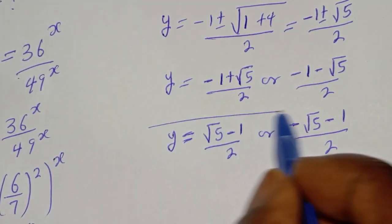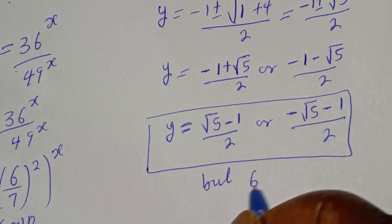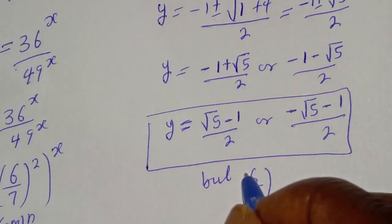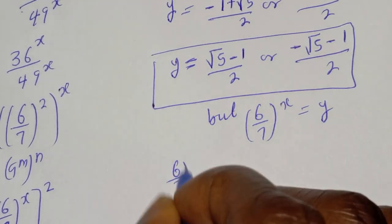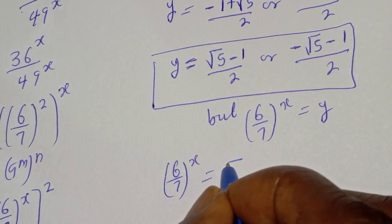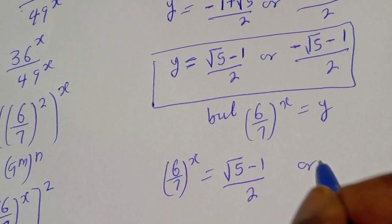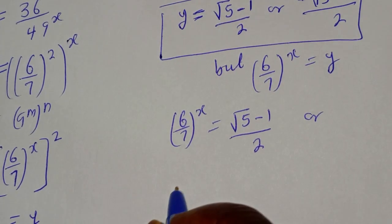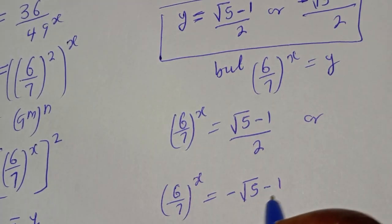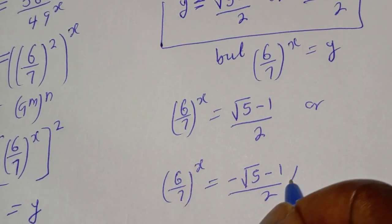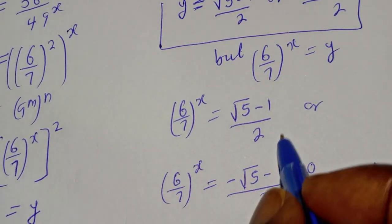These are the two values of y. But since (6 over 7) to the power of s equals y, we have y equals root 5 minus 1 over 2, or y equals minus root 5 minus 1 over 2. The second value is less than zero, so it is rejected. The only valid solution is the first one.